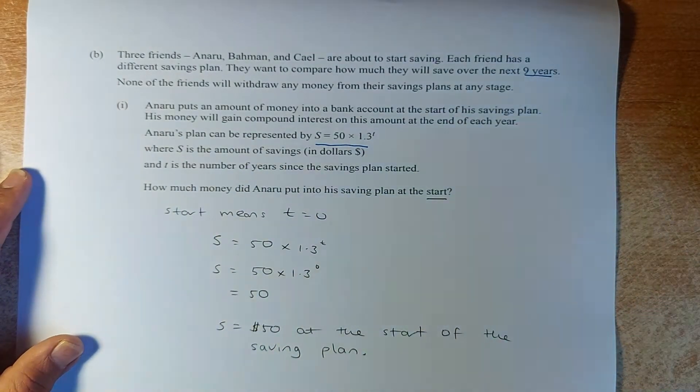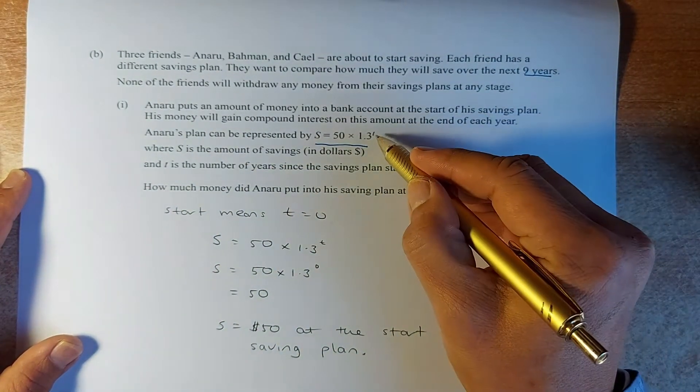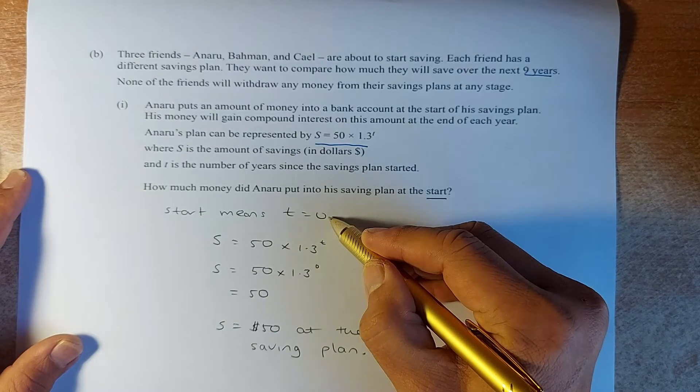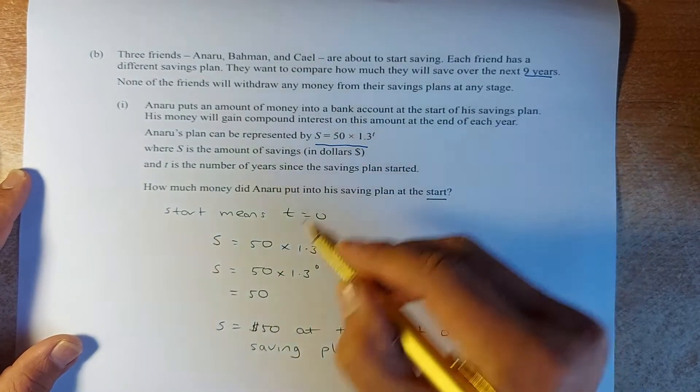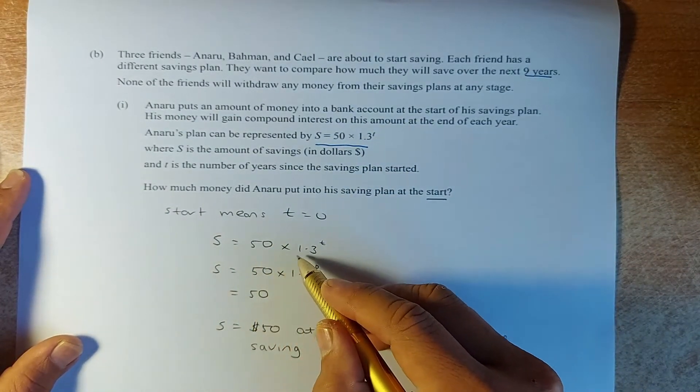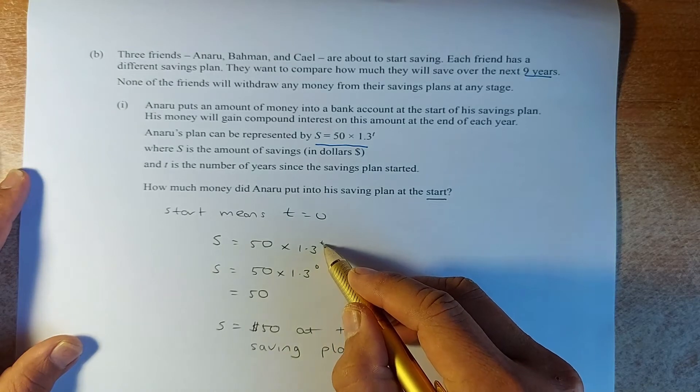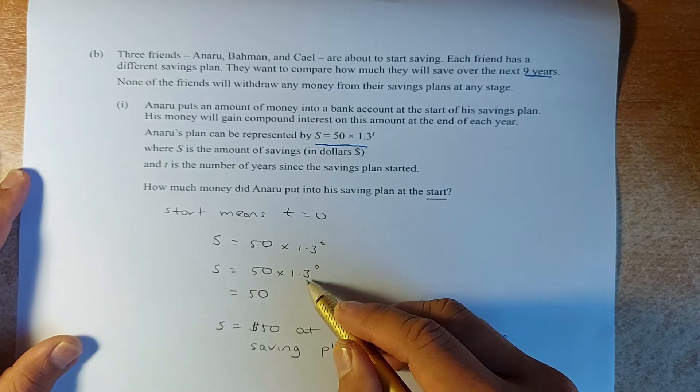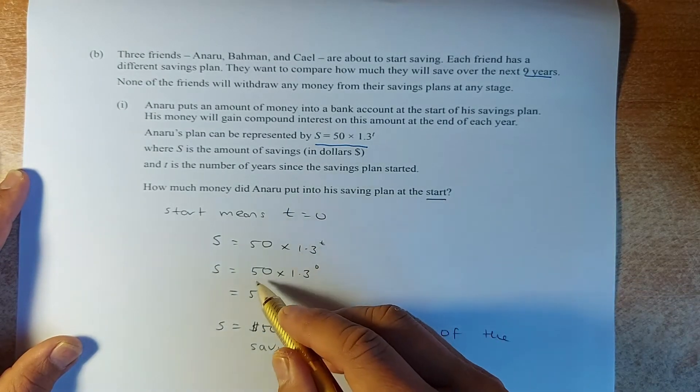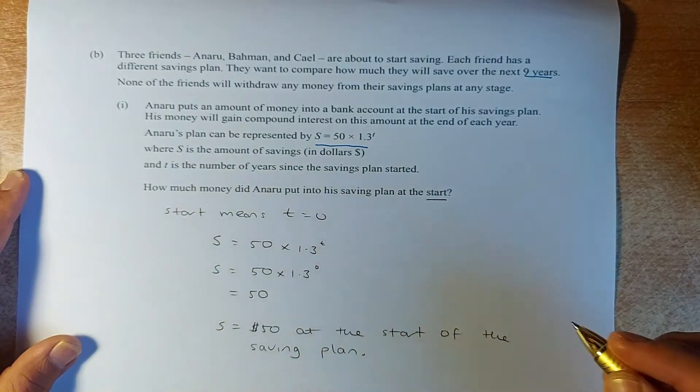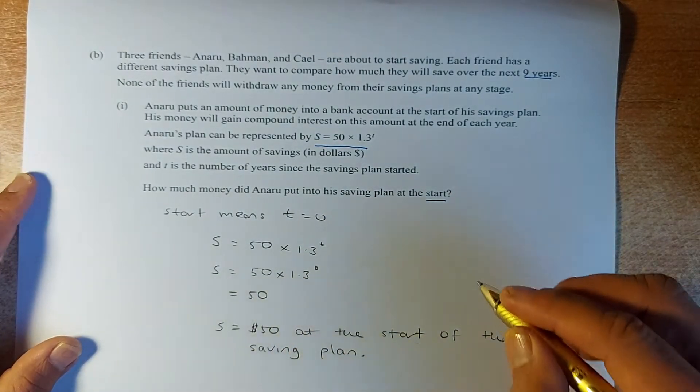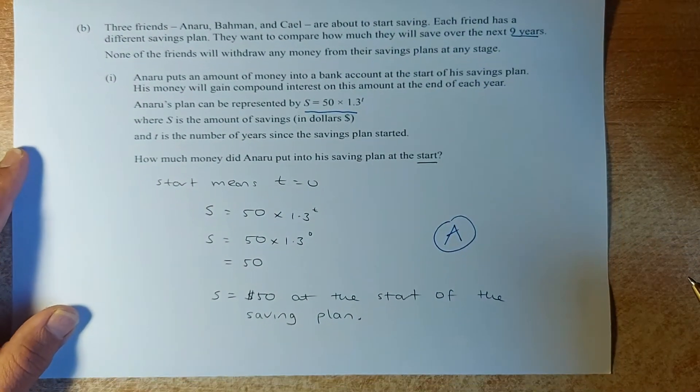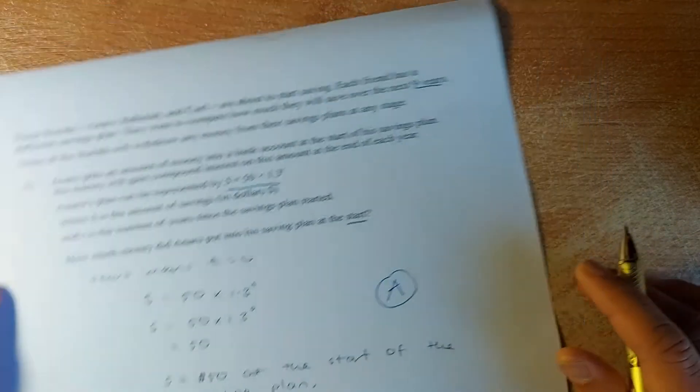So to do that, you know that at the start, time equals to 0. So when time equals to 0, you substitute 0 into that equation. So S equals to 50 times 1.3t. Instead of t, we substitute t as 0. Any number to power 0 is 1. So 50 times 1 equals to 50. So at the start of the year, he has $50. And that will be an easy achieve. Great. We will proceed to the merit question now.